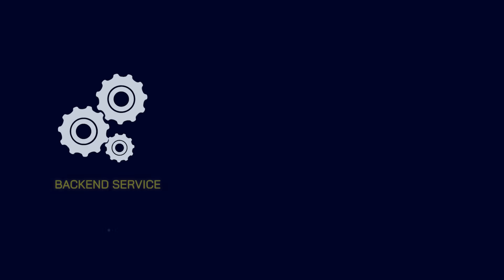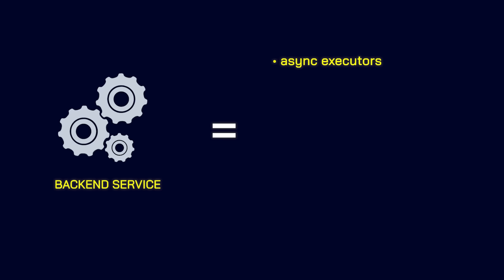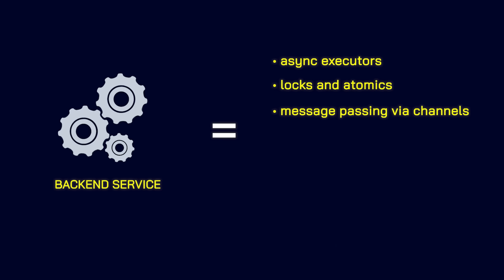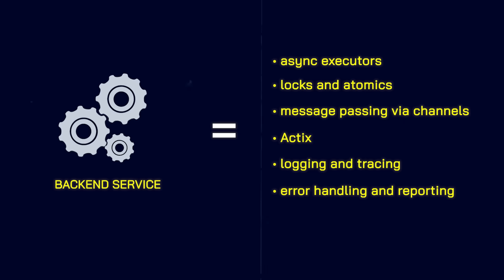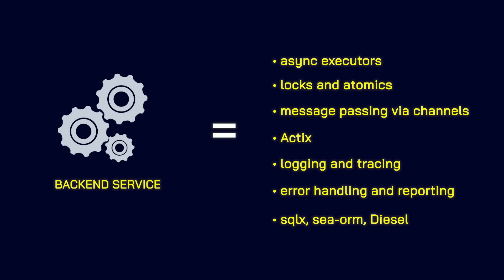For example, if you're building back-end services or distributed systems in Rust, you'll need to understand async executors, atomics, message passing via channels, actor frameworks like Actix, logging and tracing, proper error handling and reporting, and database libraries like SQLX, CORM, or Diesel.